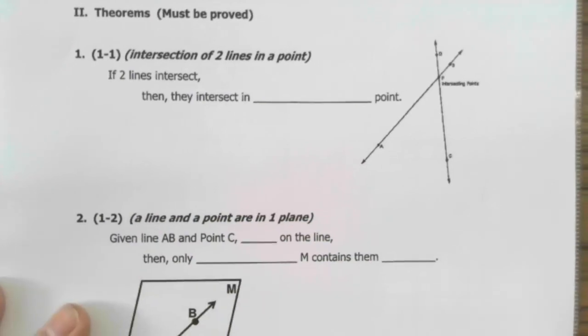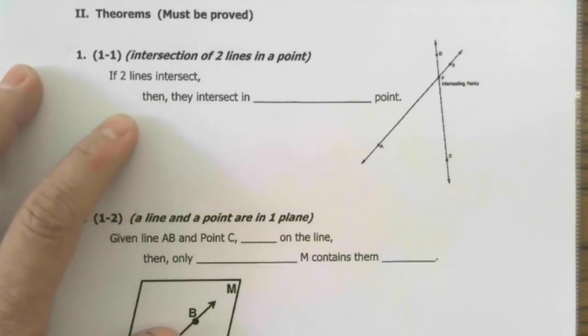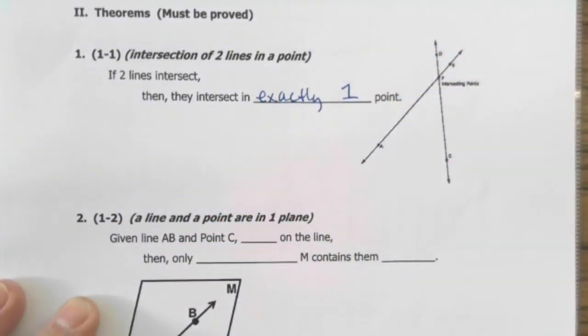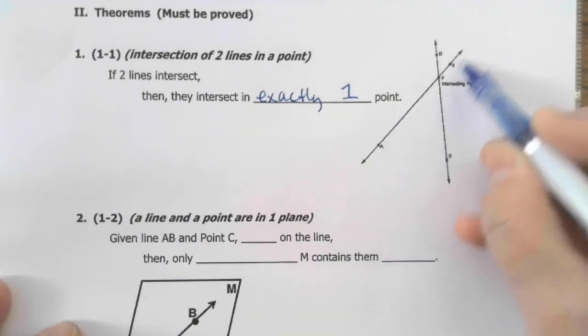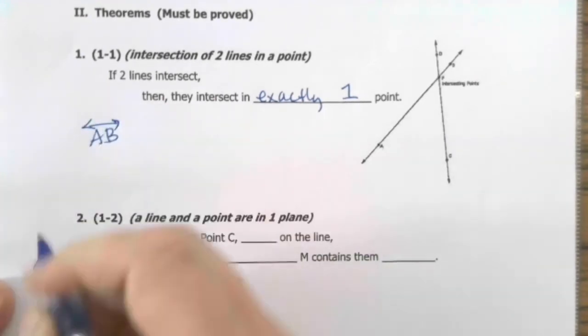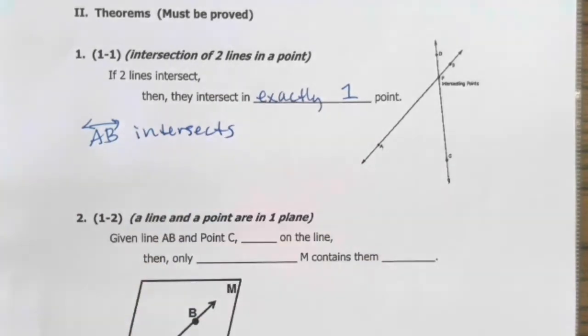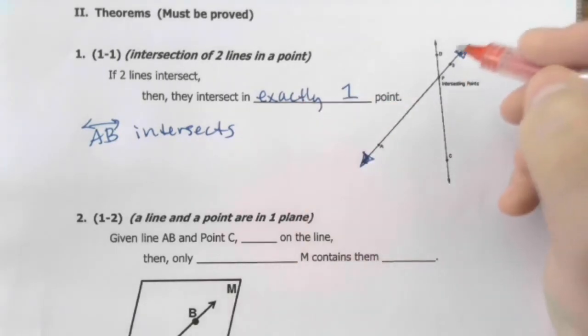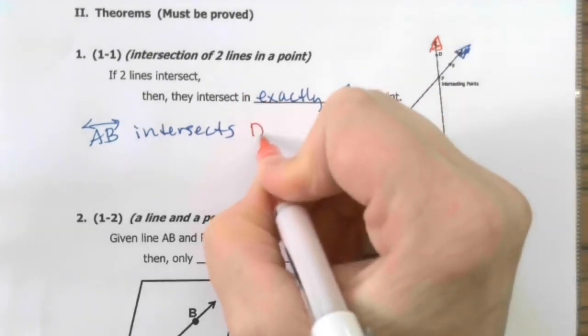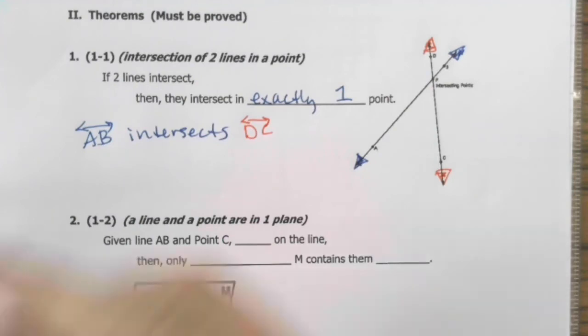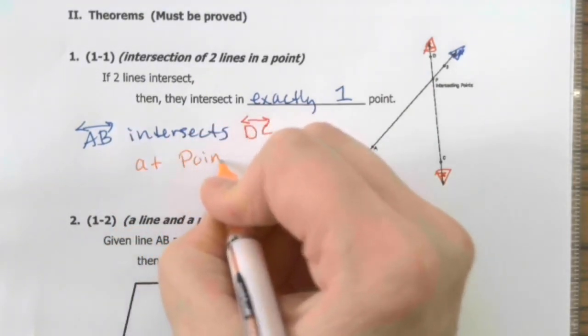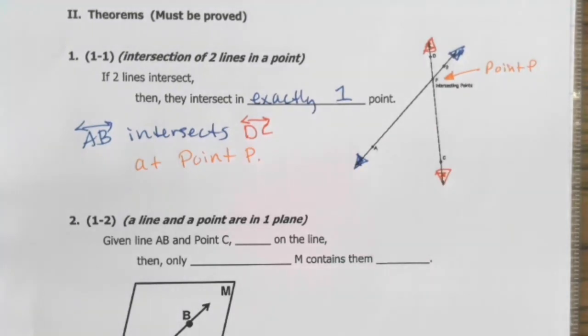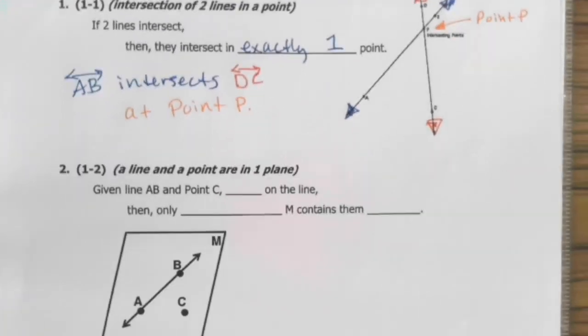These three on this page, you do have to actually state the entire thing. And that's just how it goes. So 1-1 says if two lines intersect, then they intersect in exactly one point. So these are kind of tiny, but you've got line AB, which is this one. We would say AB intersects line DC at point P. And this is point P. So that's all this is saying. If two lines intersect, they intersect at a point. That's our first theorem.